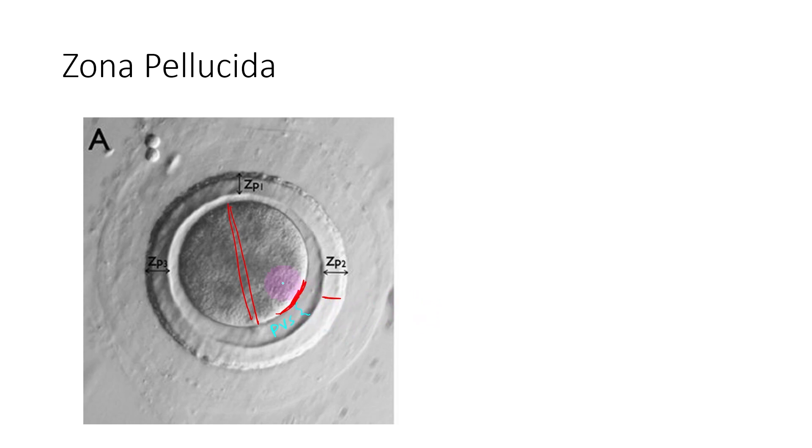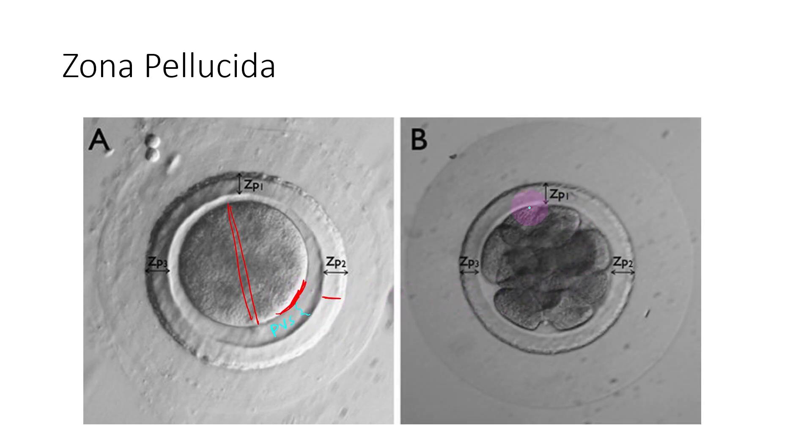Now even in the later phase, that means even after fertilization, you can see the presence of the zona pellucida in the initial cleavage divisions. This is the cleavage divisions. The cells are multiplying but still you can see the presence of the zona pellucida over there. The transparent layer around the oocyte.